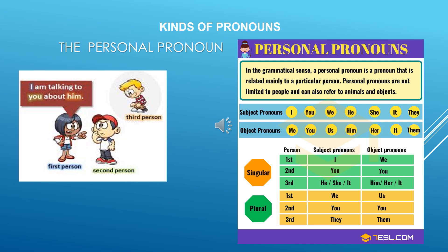In the grammatical sense, a personal pronoun is a pronoun that is related mainly to a particular person — and that's why it's called a personal pronoun. Now generally personal pronouns are not limited to people; they can also refer to animals and objects. Remember when we had done nouns, we spoke about the neuter gender — so even personal pronouns can be referred to an object or an animal.